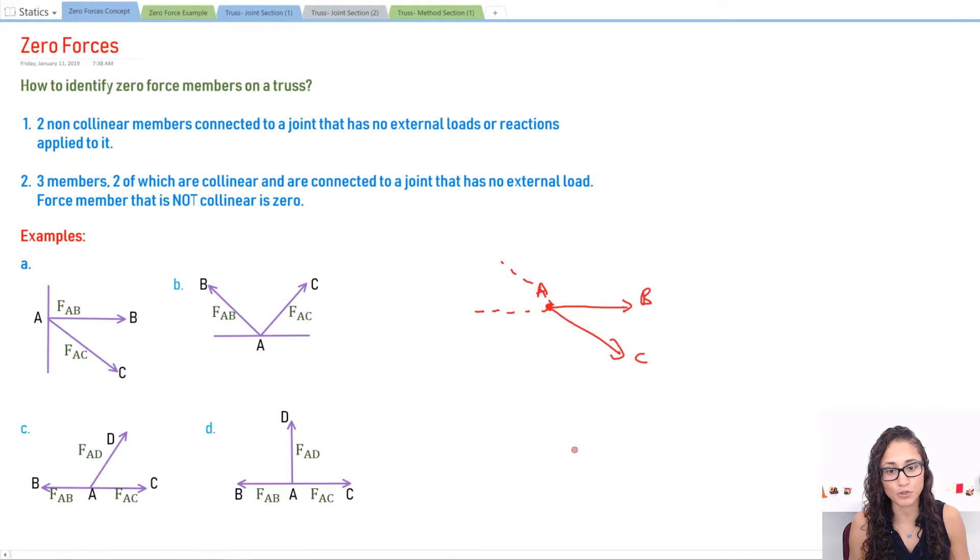If we look at example C, we have AC going this way and we have AB going this way. They have the same line of action, they're on the same plane. So this is what this means.